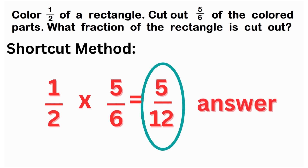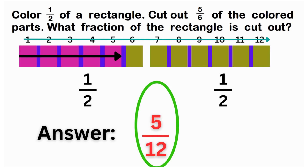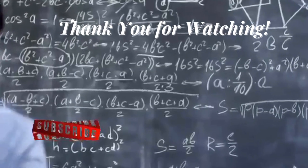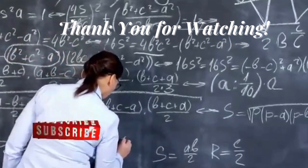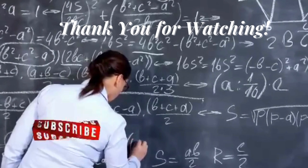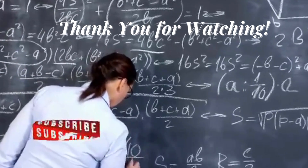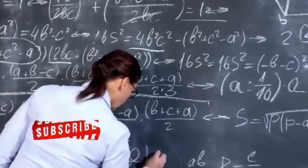Exactly the same sa bar model or block model na method — five over twelve. So, alin ang mas madali? Itong shortcut method o itong block model method? Sana naintindihan nyo yung explanation ko. Maraming salamat.